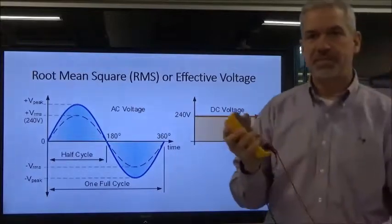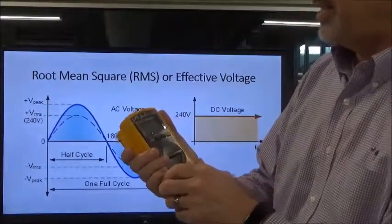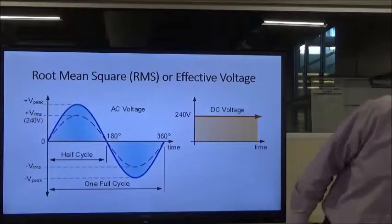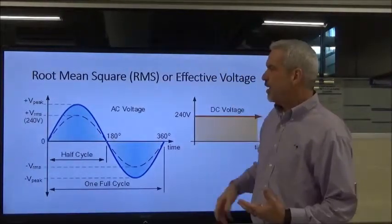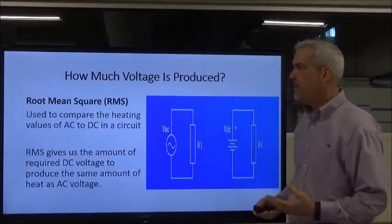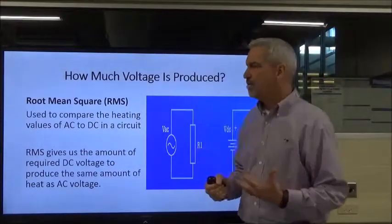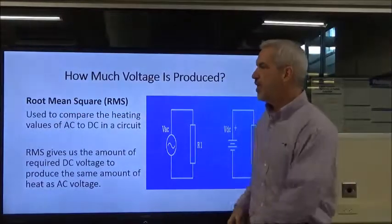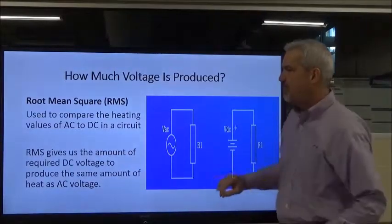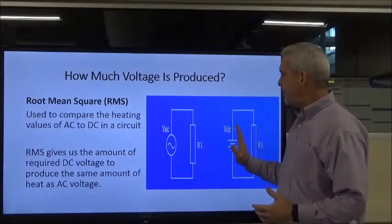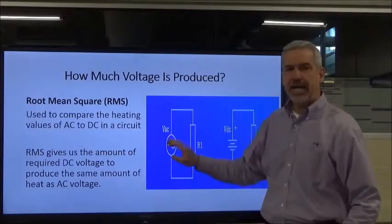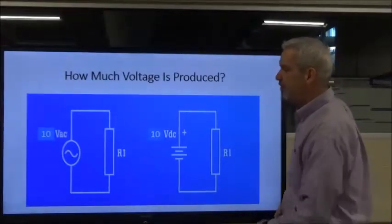Even with our Fluke meter here, it says right here: true RMS meter. That means it's measuring true RMS, not peak-to-peak or peak voltage. So our true RMS and our effective voltage are very different from peak-to-peak and peak voltage. When I'm talking about root-mean-square, this was developed so that we could compare the heat values of an AC circuit to a DC circuit. The RMS gives us the amount of voltage that needs to be applied to a DC circuit to create the same heat value as in the same AC circuit.